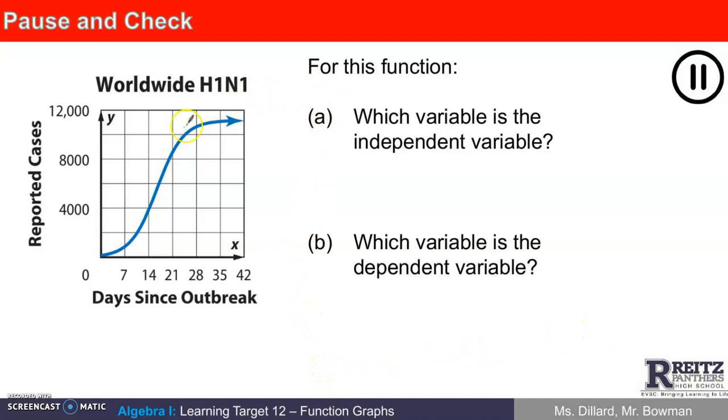Okay, let's check it out. This is a function graph that is all about the H1N1 virus. And on the horizontal axis, we have the number of days since the outbreak of the virus began. And on the vertical axis, we have the number of reported cases. So for example, about seven days after the outbreak was reported, we've got somewhere between zero and half of 4,000 is 2,000. I would say maybe that's about 1,000 ballpark. A thousand cases or so seven days after the outbreak was reported.